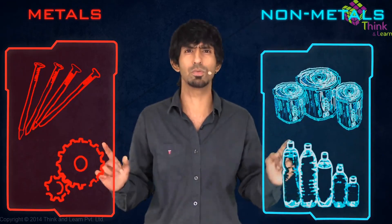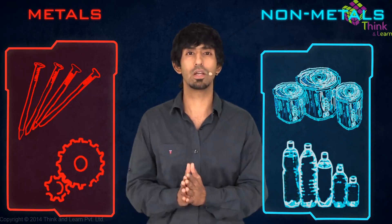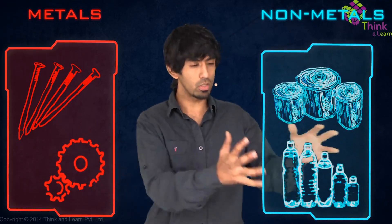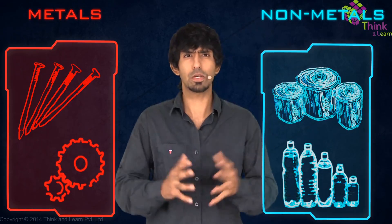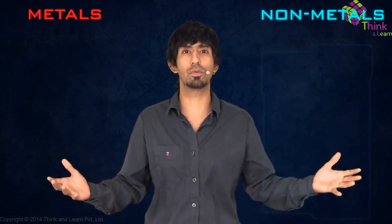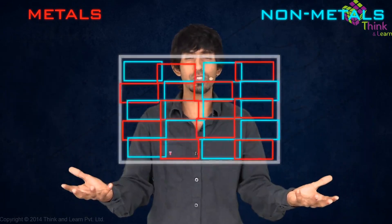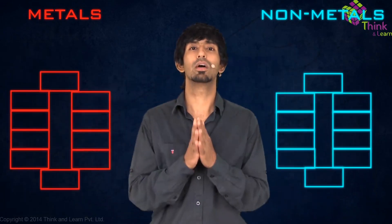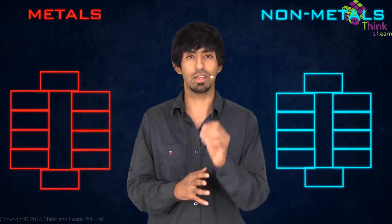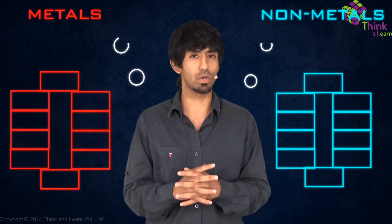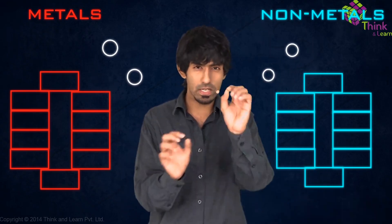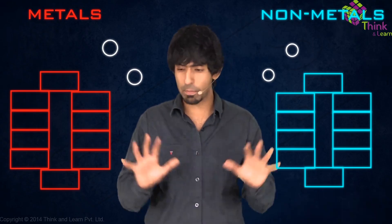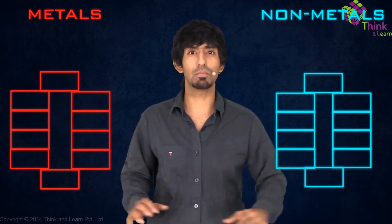There are clear distinctions between the two. All of these show these properties. There could be some exceptions, of course, like any classification we make. Anytime we try to divide nature into boxes, like we discussed in previous chapters, nature is going to always say there are a few that won't fall into these boxes.